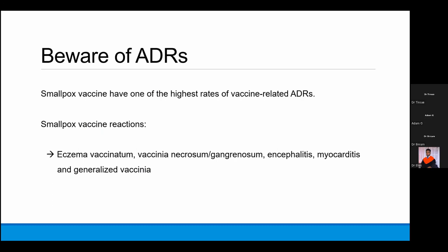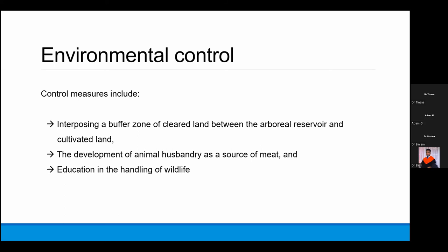Smallpox vaccines have one of the highest rates of vaccine-related adverse reactions. They can cause eczema vaccinatum, necrotic skin lesions at the vaccination site called vaccinia gangrenosa, encephalitis, myocarditis, and generalized skin rash or vaccinia. Especially in rural areas, control measures should include having a buffer zone of cleared land between forest and cultivated areas, moving from bush meat consumption toward farm animal husbandry, and education on safe wildlife handling — as all these risks are also observed in rural Ethiopia.